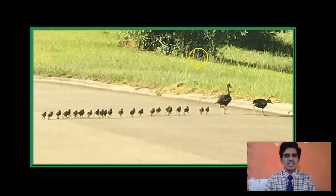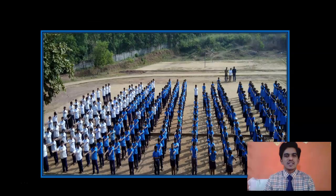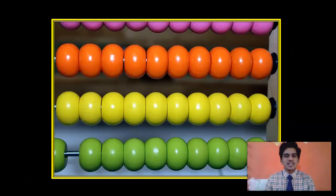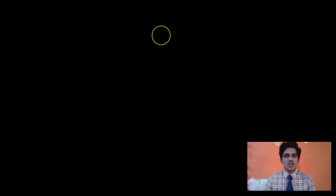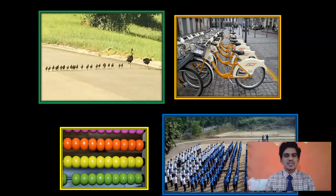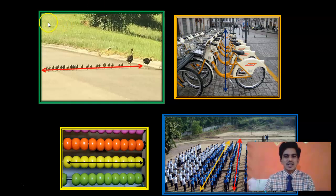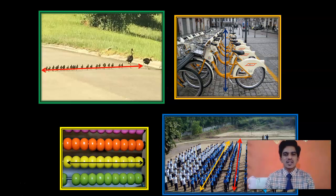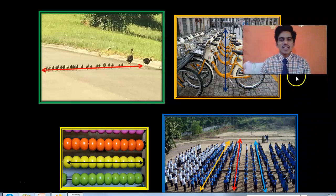You try to understand the geometrical concept present in all these pictures. You observe picture 1, then 2, here we have a third picture, and this is the last one. The common geometrical concept is a straight line. The ducklings are following their parents in a straight line, these bicycles are arranged in a straight line, these beads are present in a straight line, and the kids are doing their physical activity by standing in a straight line.